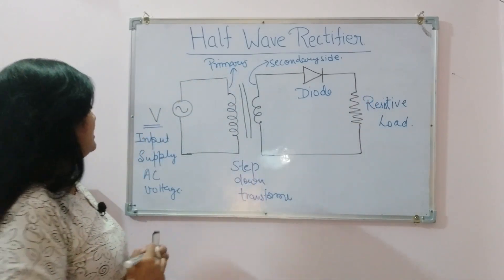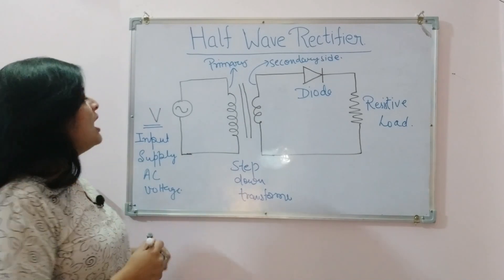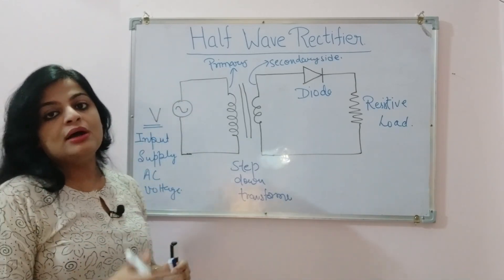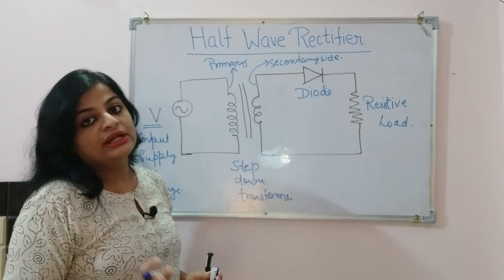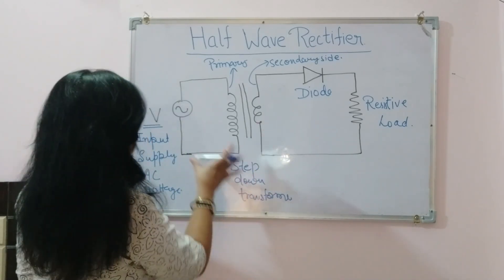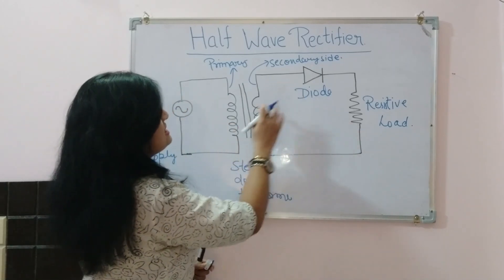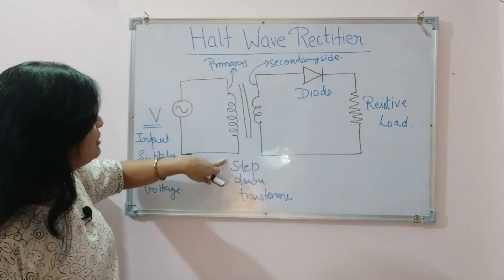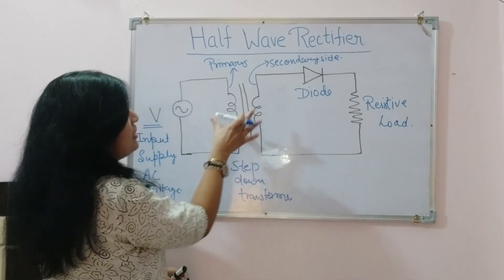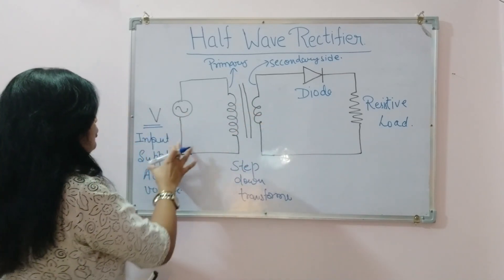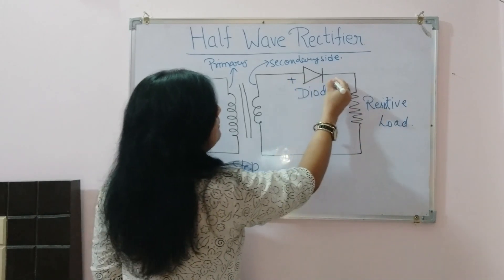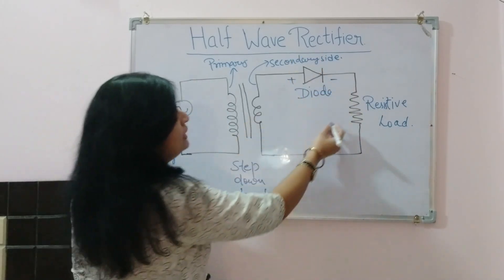Now, why do we use a step-down transformer? When our input supply AC voltage is a high AC voltage, in electronics, when we operate devices, we need a lower electrical signal — so its range needs to be reduced. To reduce that range, we use a step-down transformer, which steps down the high input AC signal to a low input AC signal. The step-down transformer has more turns on the primary side and fewer turns on the secondary side, reducing the voltage. We then apply this low AC signal to the diode, and at last, here is our resistive load R.